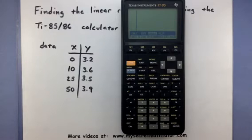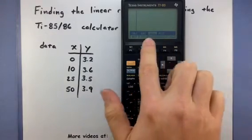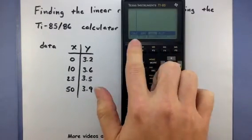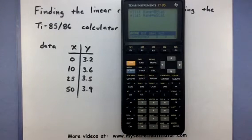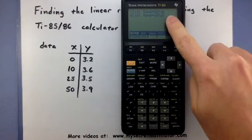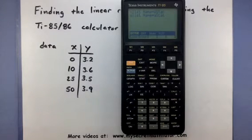To have the calculator do the linear regression line, we need to go into our Calc menu. Press 2nd and Calc, and it wants to know what list you want to use. Everything is stored in XSTAT and YSTAT, so we'll leave those by pressing Enter twice.